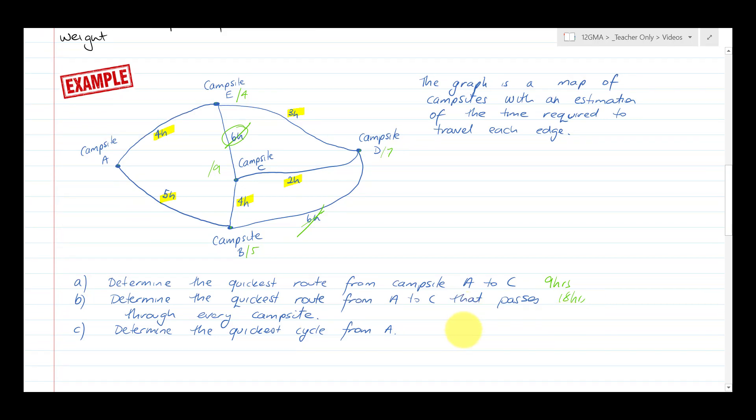Determine the quickest cycle from A. Well, that's 18 hours. Actually, the quickest cycle... a cycle is just a closed path. We're better off doing this and this and then this and this. And there's an equivalent answer to go around to here, then just go straight to campsite B and up to A. Because this is six hours and these two added together are six hours. So 18 hours is the answer here as well.